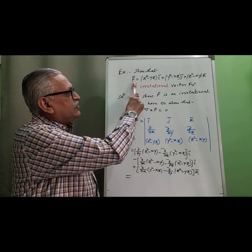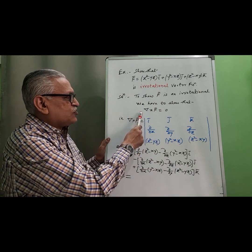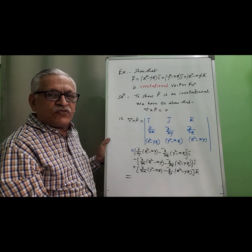Hello friends, show that the given function F̄ is an irrotational vector function. To show this, we have to prove that del cross F̄ is equal to 0.